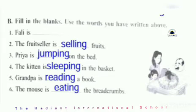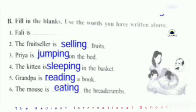Second: the fruit seller is selling fruits. Third: Priya is jumping on the bed — J-U-M-P-I-N-G, jumping on the bed. Fourth: the kitten is sleeping in the basket — S-L-double-E-P-I-N-G, sleeping. Fifth: grandpa is reading a book — R-E-A-D-I-N-G, reading a book. Sixth: the mouse is eating the breadcrumbs — E-A-T-I-N-G, eating. The mouse is eating the breadcrumbs.